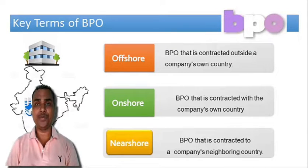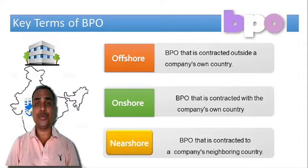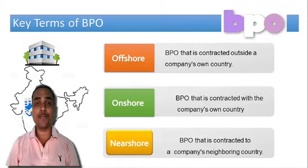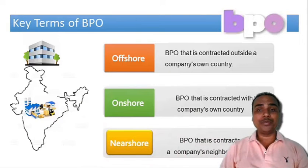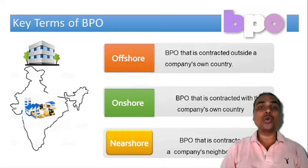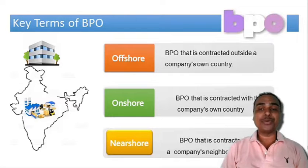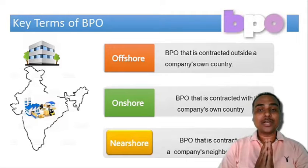Key terms of BPO. Number one: offshore BPO, that is contracted outside a company's own country. Number two: onshore BPO, that is contracted within a company's own country. Number three: nearshore BPO, that is contracted to a company's neighboring country.